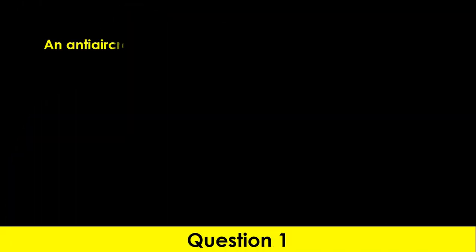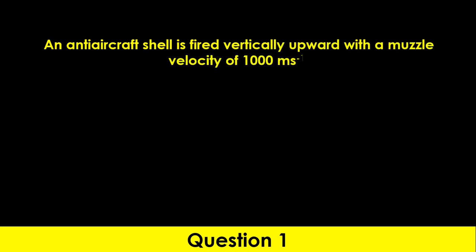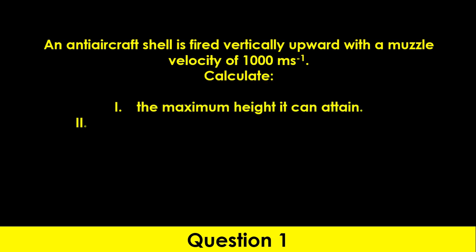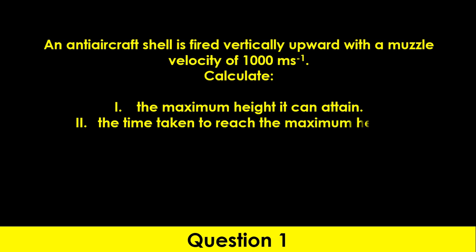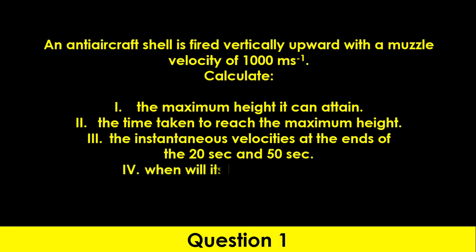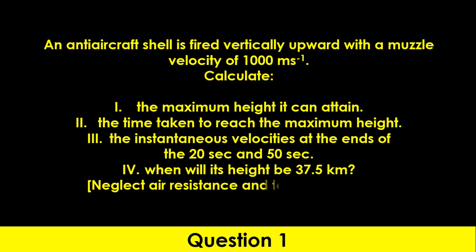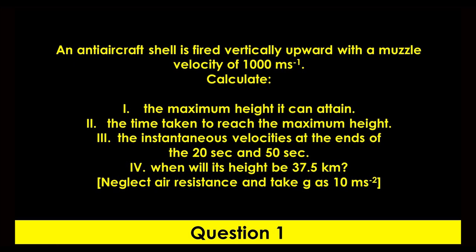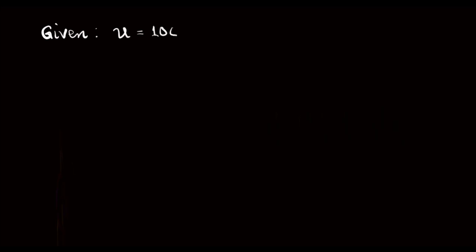Question 1. An anti-aircraft shell is fired vertically upward with a muzzle velocity of 1000 meters per second. Calculate: 1. The maximum height it can attain. 2. The time taken to reach the maximum height. 3. The instantaneous velocities at the ends of 20 seconds and 50 seconds. 4. When will its height be 37.5 kilometers? Neglecting air resistance and taking acceleration due to gravity as 10 meters per second squared. This question is on vertical projection since the projectile was fired vertically upwards. From the information provided, we are given the initial velocity U equals 1000 meters per second.